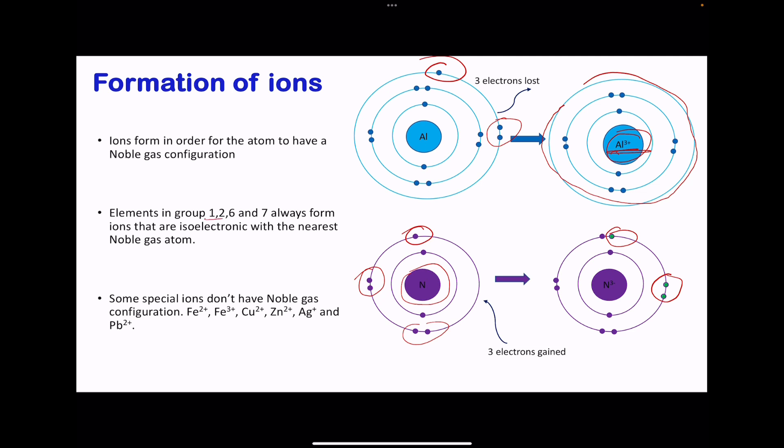When elements of group 1, 2, 6, and 7 form ions, they are usually isoelectronic with the nearest noble gas. Some other special ions that don't form noble gas configurations include iron 2, iron 3, copper 2, zinc 2, silver 1, as well as lead, as we saw previously.